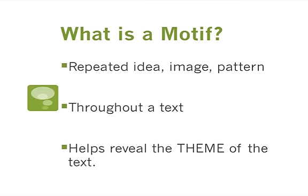Technically, a motif is a repeated idea, image, or pattern throughout a text. When we say throughout a text, we're not talking about maybe just one chapter — we mean beginning, middle, and end, and it is quite possibly woven throughout. So it may not be the same thing every single time; it may be woven throughout characters or different variations. But at the very least, it is throughout the text, and it's something that we will start to see developing as we read further into a novel.